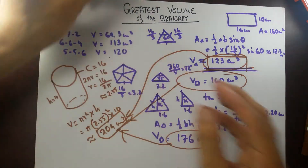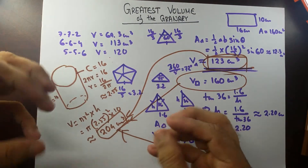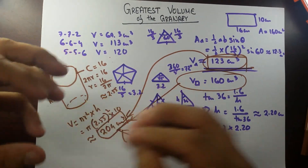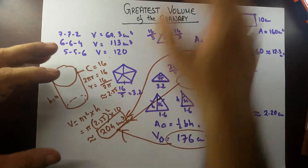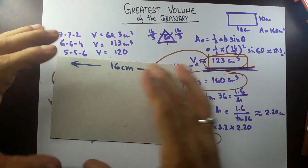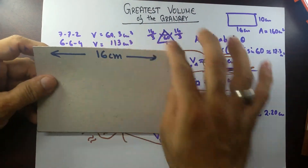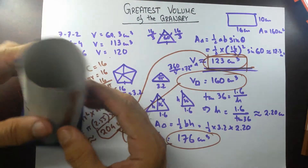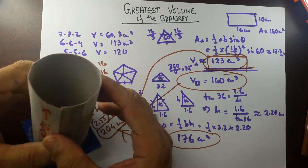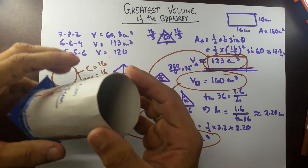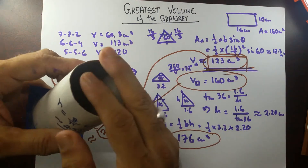People of ancient times and today use a granary — something that stores food, grains, or farm feed inside. They need the largest possible volume for the same surface area. You can get maximum volume with a sphere, but there are practical limitations to using a sphere. The best practical choice is a cylinder.